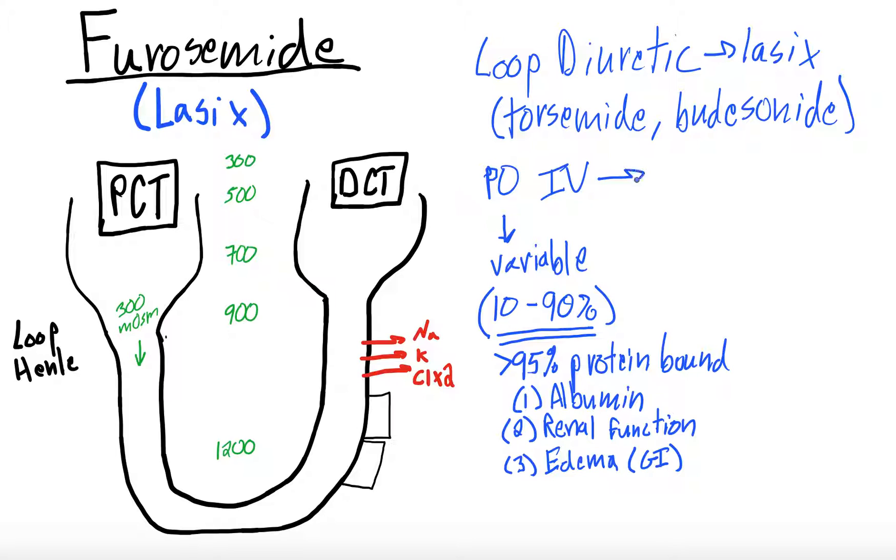IV Lasix, the traditional teaching is that IV Lasix is two times as potent as PO Lasix. This, though, is based on this highly variable bioavailability. They say, hey, 10-90% bioavailable, let's just say it's about two times as potent. So, this is actually somewhat of a misnomer. Honestly, I still use it in clinical practice, but it's a rough estimate. It is not a firm rule.